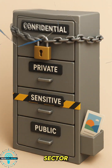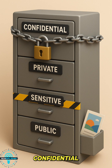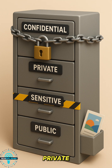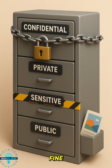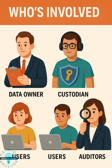In the private sector: Confidential — high stakes stuff like trade secrets or customer info. Private — internal use only, like employee records. Sensitive — needs care but not mission critical, think internal emails. Public — totally fine if it gets out, like your company's marketing flyer.